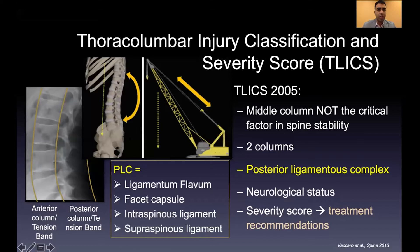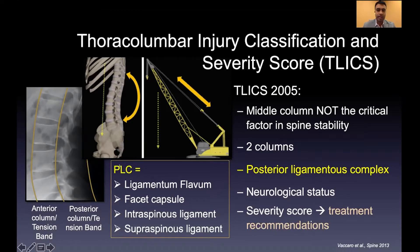If the PLC is disrupted or suspected to be disrupted, that confers a higher degree of instability to the spine. Fracture dislocations and distraction-type injuries often have PLC involvement and are technically unstable. They also look at the morphology of compression fractures like burst or partial burst fractures.